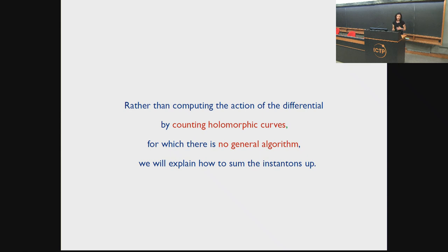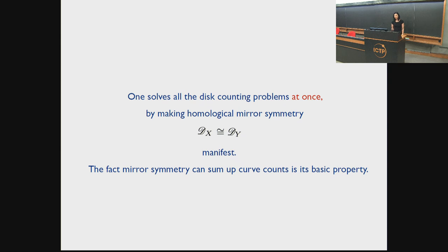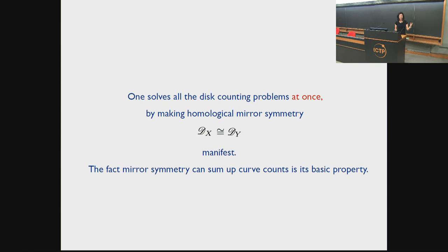Rather than computing the action of the differential by counting holomorphic curves — for which there is no general algorithm in the open string case, unlike in the closed string — we'll rather explain how to sum instantons up. We'll avoid counting disc instantons. We'll essentially solve all disc counting problems at once by making homological mirror symmetry manifest — that relates the category of A-branes to the category of B-branes. The fact that homological mirror symmetry sums up curve counts is its basic property.